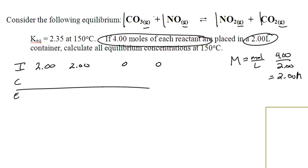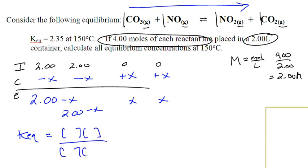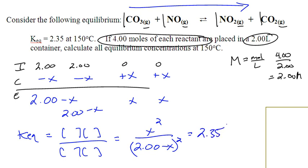This clearly shifts to the right because there are no products. Reactants go down and products go up. Because the ratio is 1:1:1:1, the change row is −x, −x, +x, +x. At equilibrium: 2.00 − x, 2.00 − x, x, x. Set up the Keq expression: x squared over (2.00 − x) squared equals 2.35. Square root both sides, cross multiply, combine like terms, divide both sides by the resulting coefficient, and you get x. Plug x back into the ICE table to get your answer.